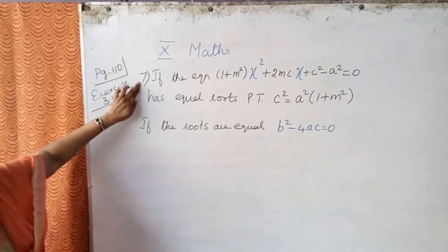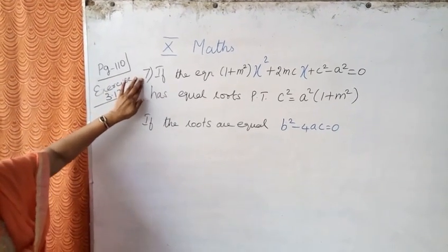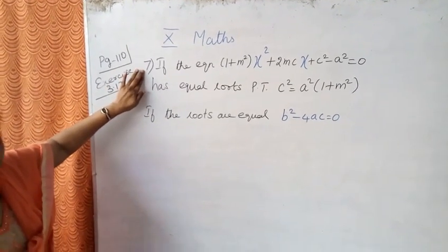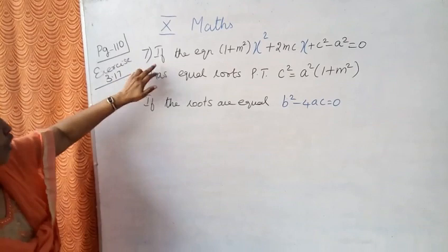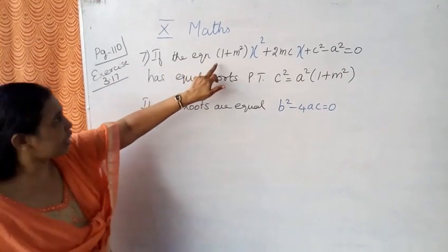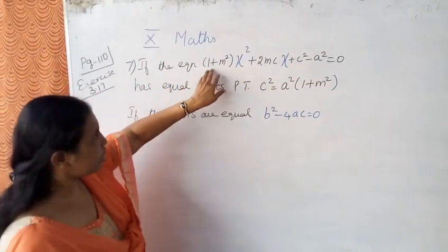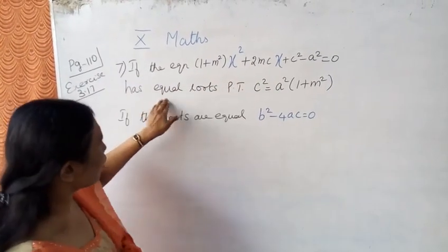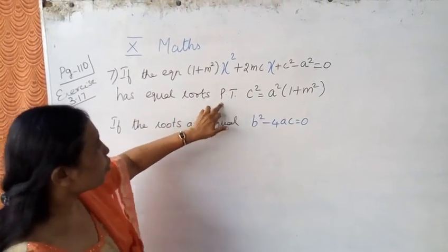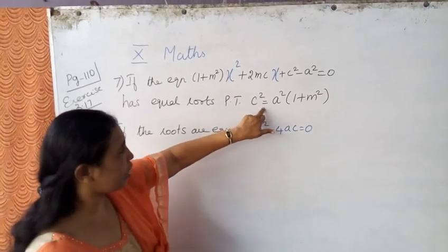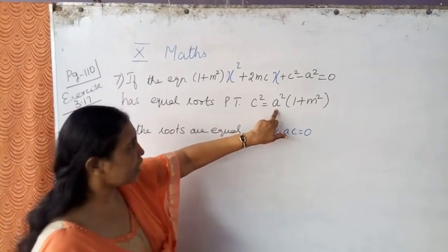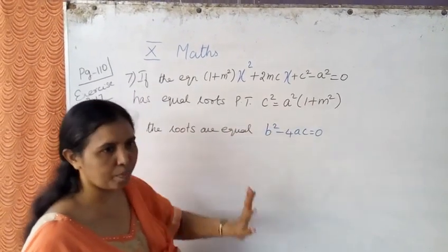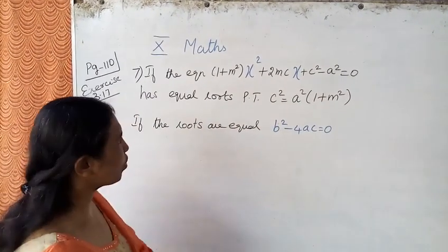7th sum. You can see this sum. If the equation has equal roots, prove that c square equals a square into 1 plus m square.